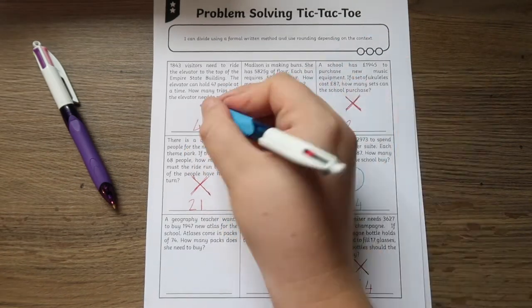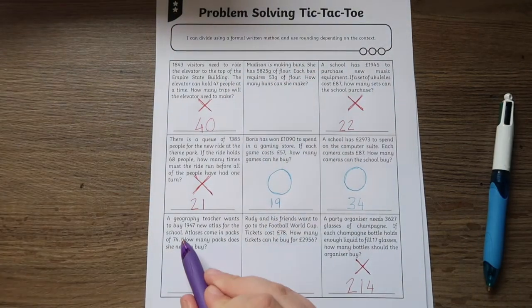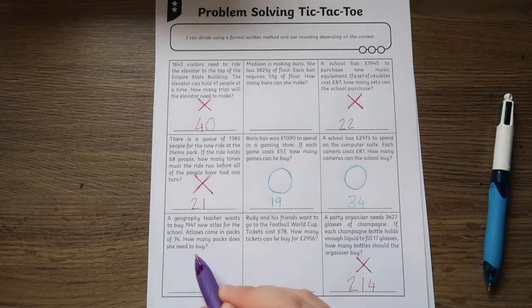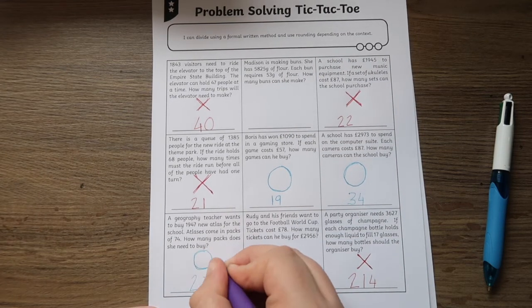You could add extra challenges to this fun game, such as they could have three tries to get an answer correct before they miss their turn, or even that they have to do a forfeit, such as a silly dance, if they get their answer incorrect.